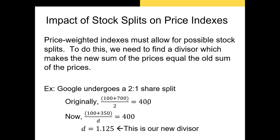Here's how that's done. In the previous example, if Google undergoes a two-for-one share split, the shares that were worth $700 prior to the split are now only worth $350, but you own two of them. To account for this, we take our original equation used to calculate the index value at time period zero, plug in the new value of Google shares, and solve for a new divisor D, which will be 1.125 instead of 2. Every time we calculate the value of the index going forward, 1.125 will be our denominator.